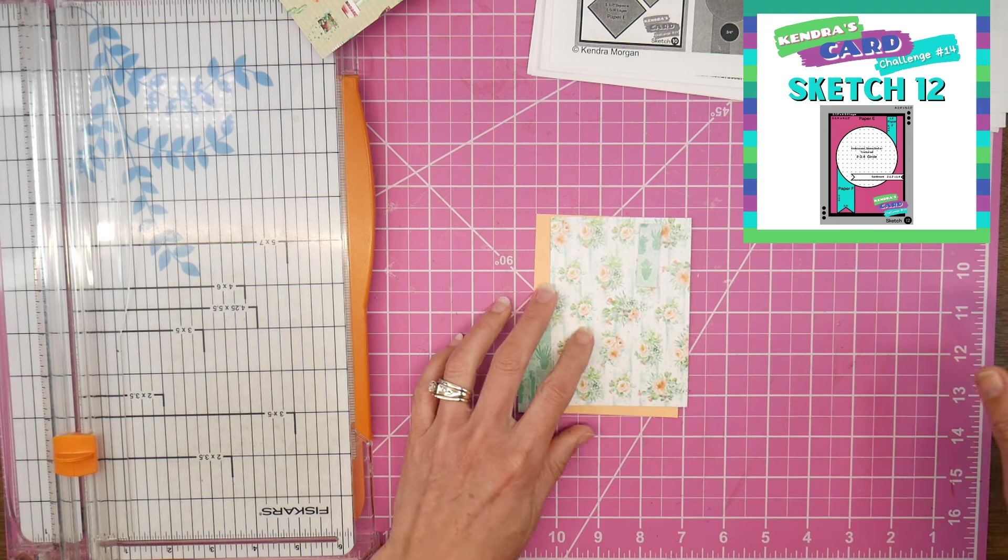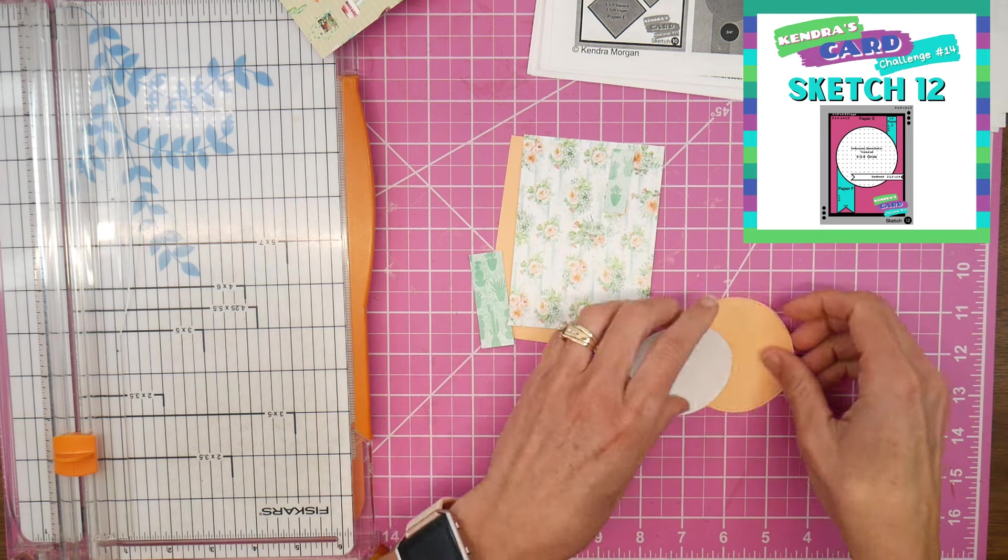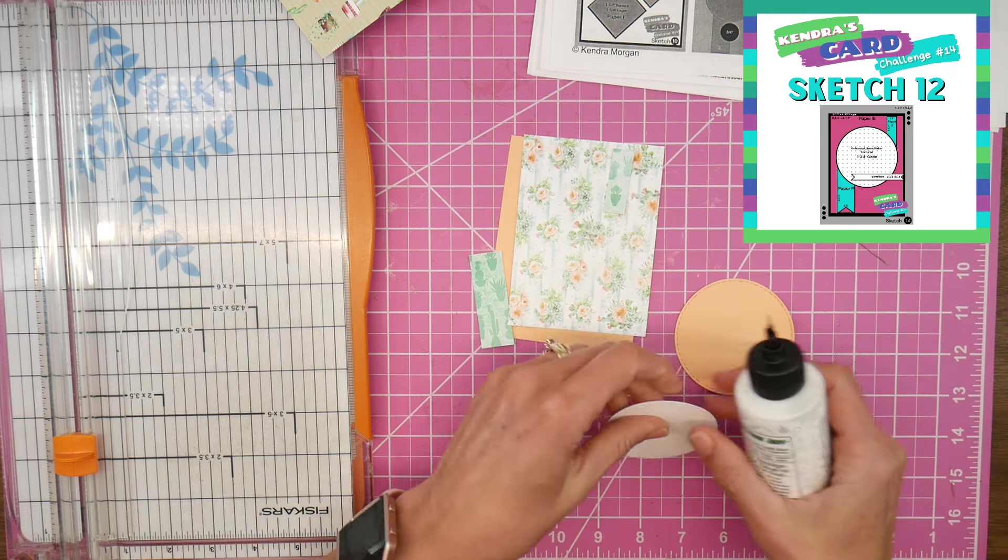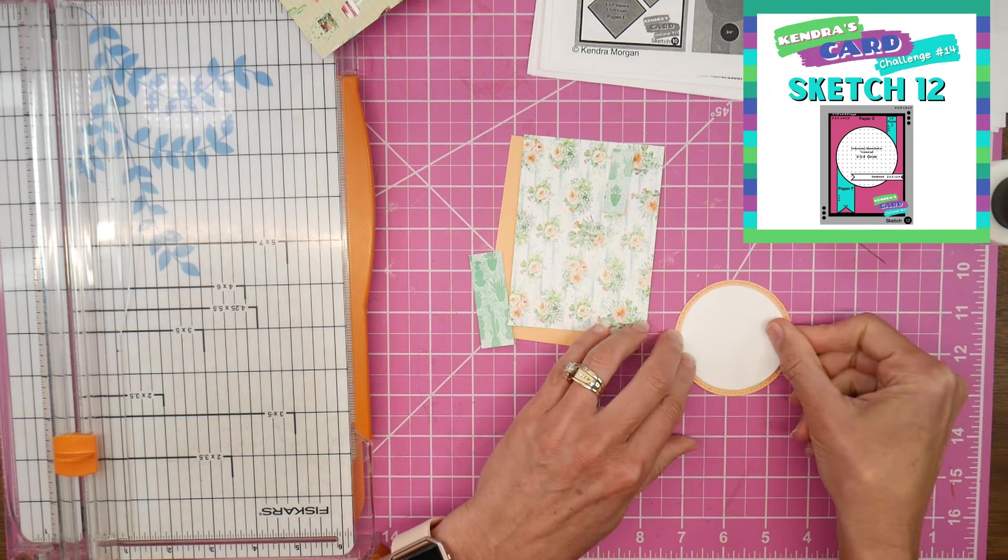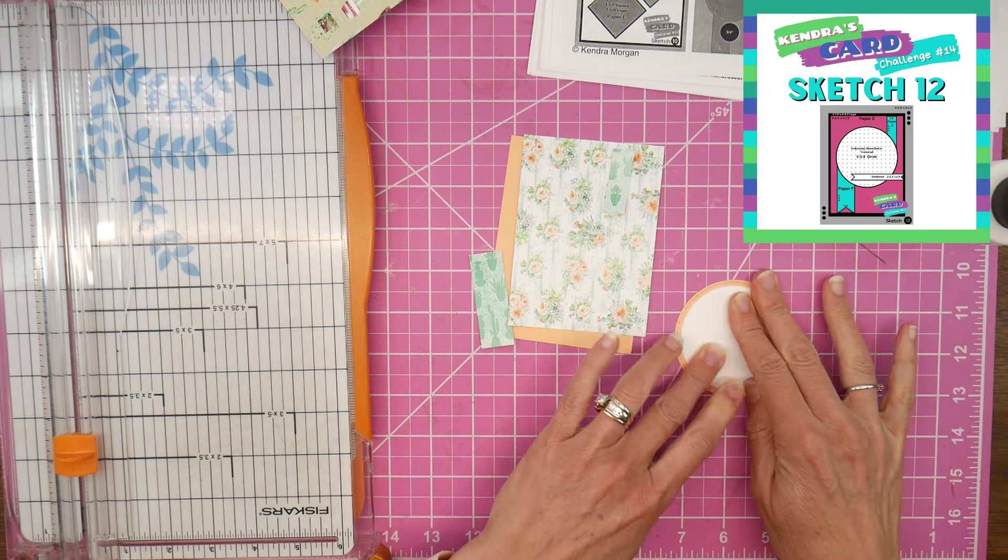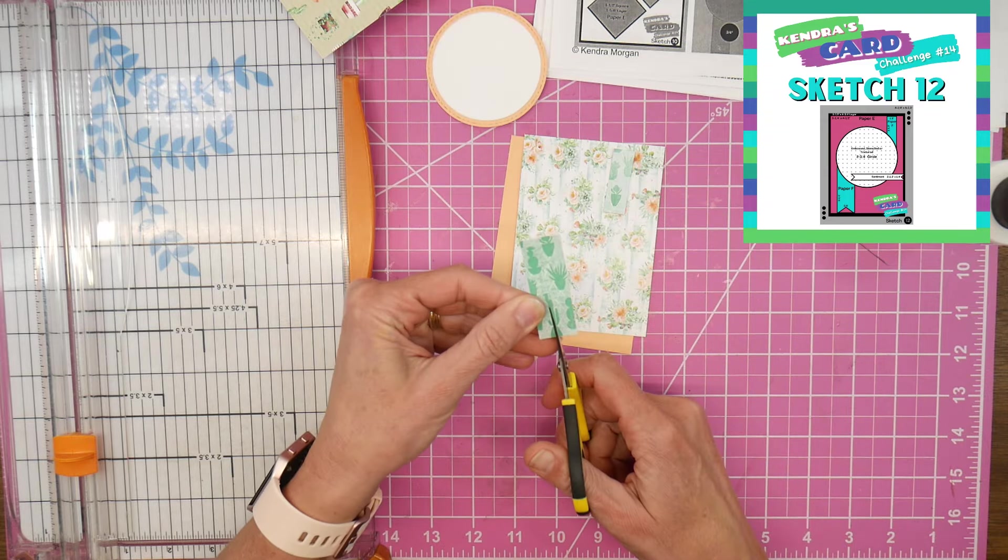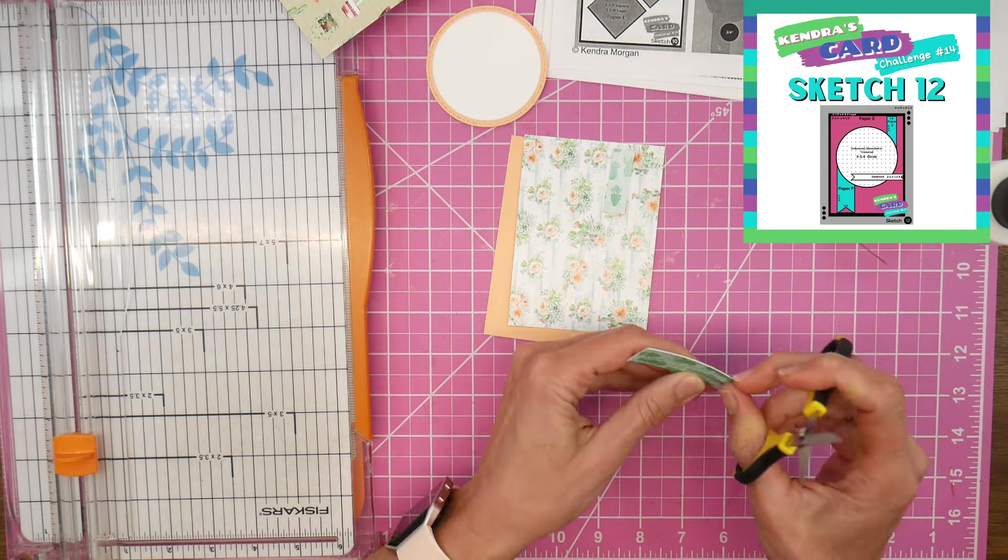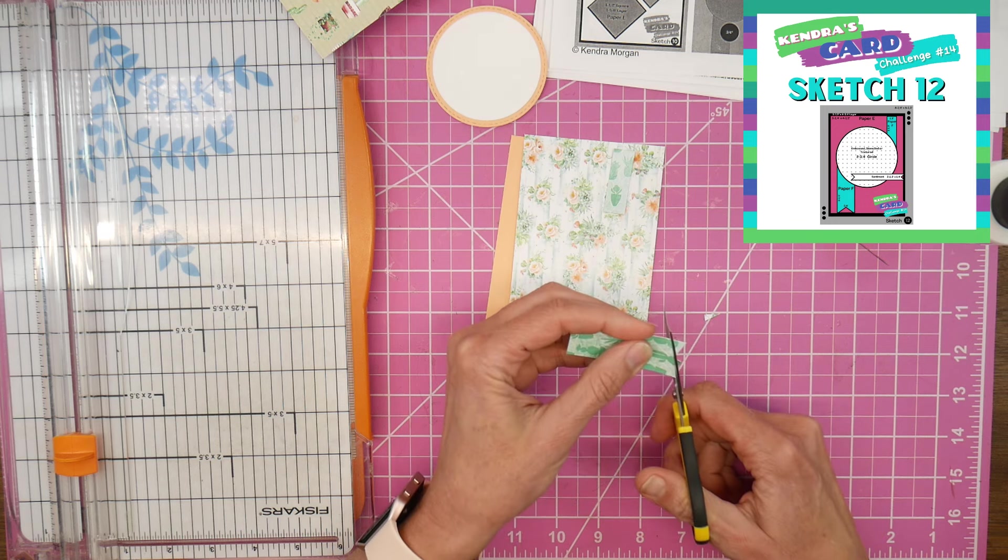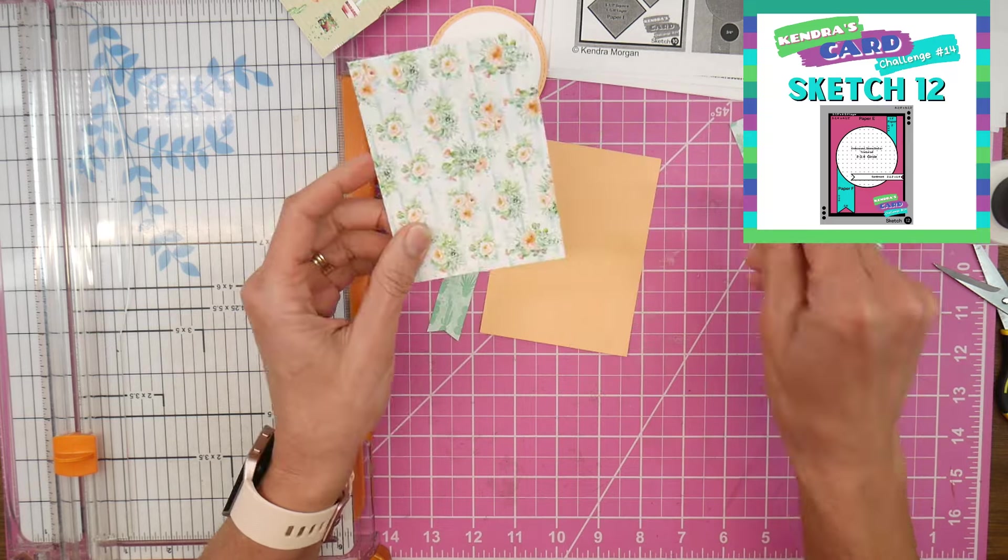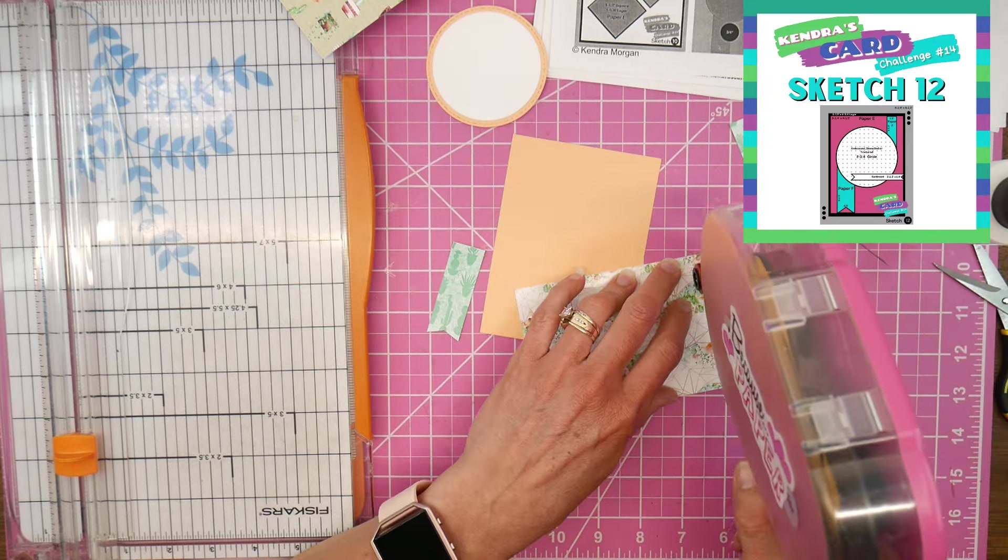I did bring in a peach cardstock to mat since the pattern paper had a white background, and then I'm using white cardstock with another peach mat for my circle element in the center. I chose a more solid green for my strips that go at the top and bottom of the circle, so I found kind of a mint tone on tone pattern in the pad.